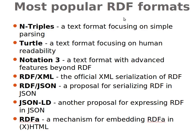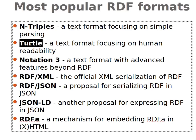RDF is a data model with several serialization formats. N-Triples is a text format focusing on simple parsing. Turtle is a text format focusing on human readability — I'll explain it in more detail in upcoming videos. Notation 3, RDF/XML (the official XML serialization of RDF), and RDF/JSON are other formats. The most human-readable one is Turtle. I'll stop here — thank you very much for watching and I'll see you next time.